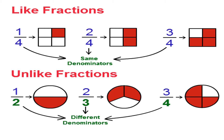Whereas in case of unlike fractions, fractions that have different denominators. You can see in the picture: one is showing the half fraction, another is showing two thirds, and the third one is showing three fourths. All are having different denominators — two, three, and four. So if they are having different denominators, then the fraction is called an unlike fraction.